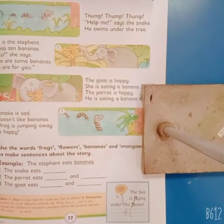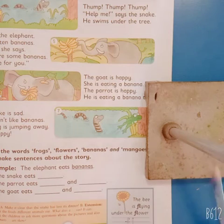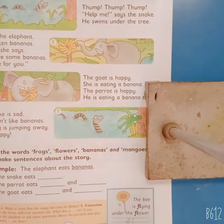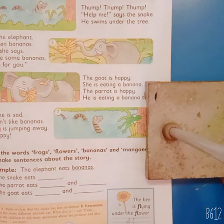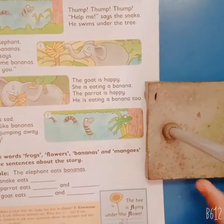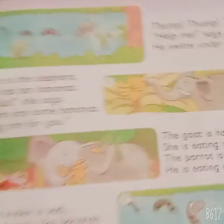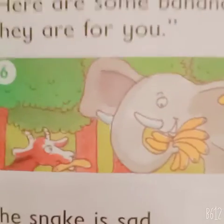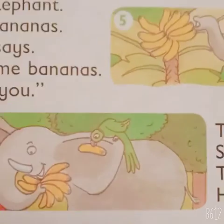Here's paragraph number 6. The goat is happy. She is eating a banana. The parrot is happy. He is eating banana too. Look here — here's the parrot and here's the goat. The goat is happy because she is eating a banana, and the parrot is also happy because he is also eating a banana.